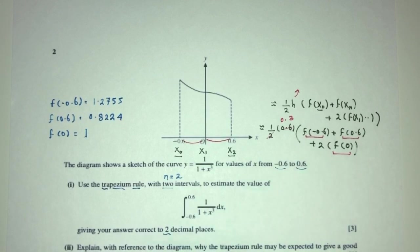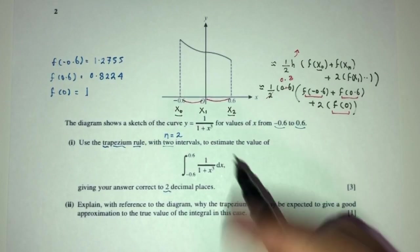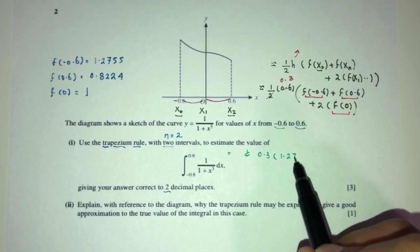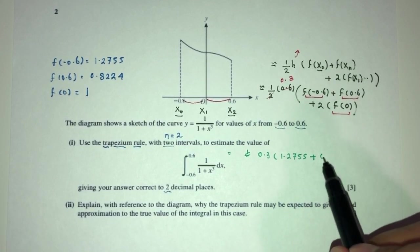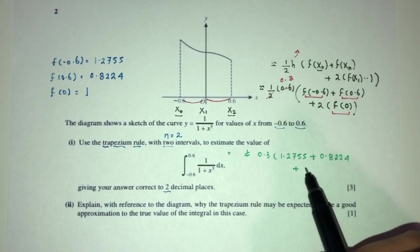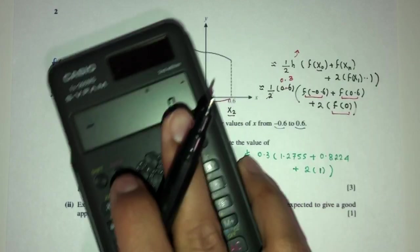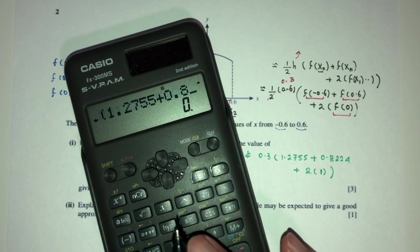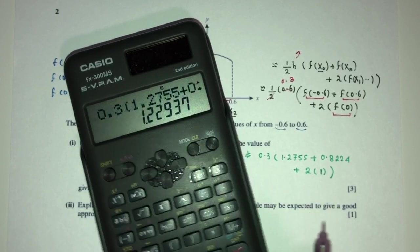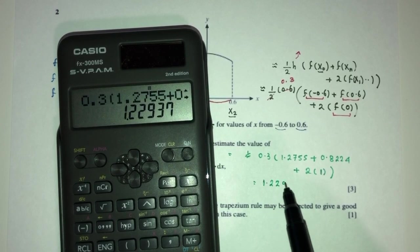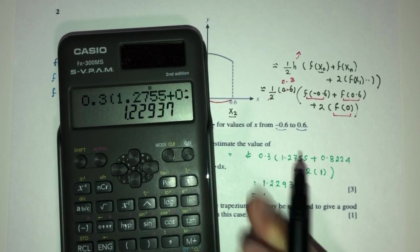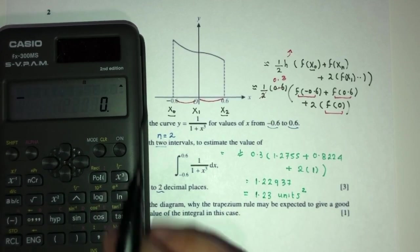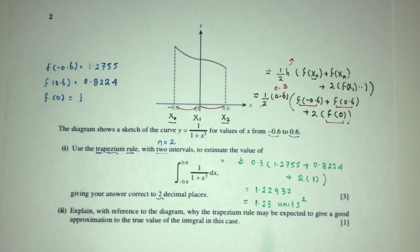Plugging the values in: 0.3 × (1.2755 + 0.8224 + 2×1) = 0.3 × 5.0979... = 1.22937. Correct to two decimal places, that is 1.23. This is the estimated area of the integral using the trapezium rule.